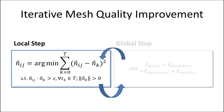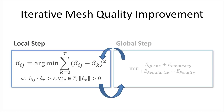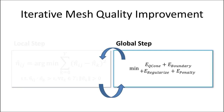At each step, we first solve a set of local per-cone convex constrained optimization problems, followed by a global quadratic energy minimization step which reconciles these local solutions.